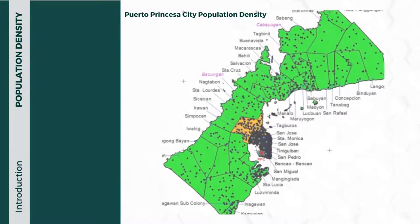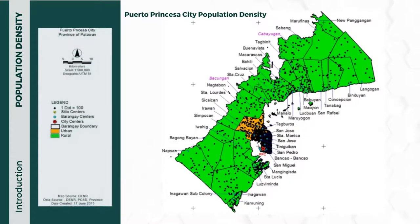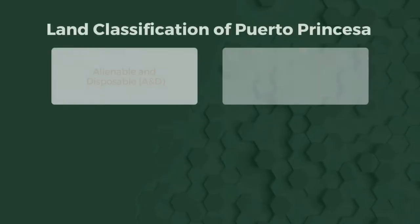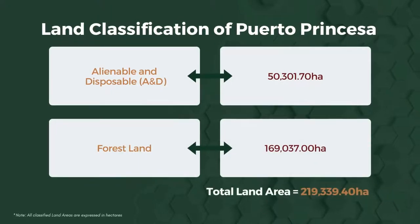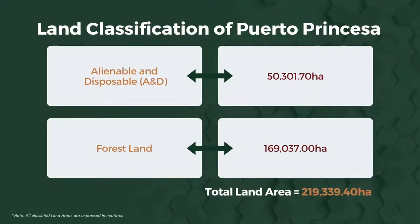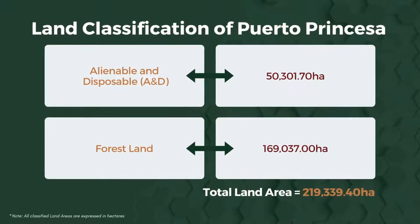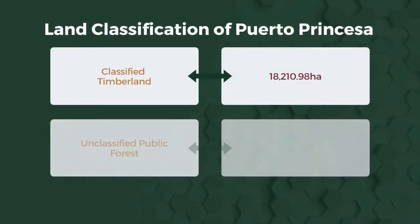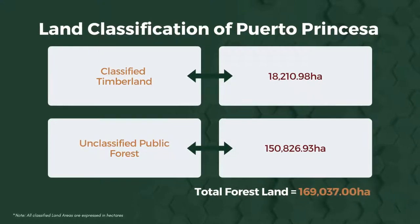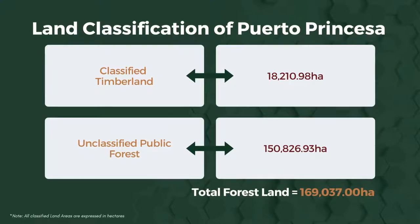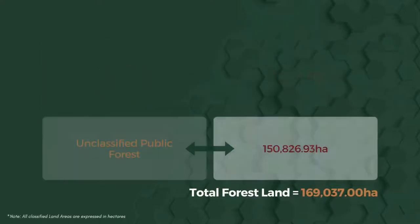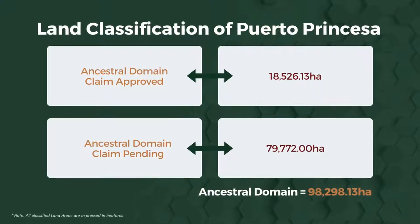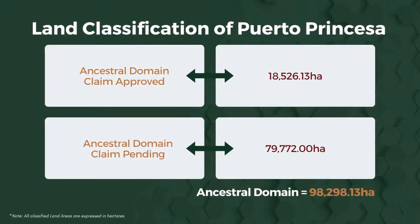The population is concentrated in the urban areas. The total land area of Puerto Princesa is 219,339.40 hectares, where alienable and disposable land amounts to 50,301.70 hectares and forest land is 169,037 hectares. Classified timber land is around 18,210.98 hectares and unclassified public forest is around 163,826.93 hectares. The settlement claim approved is around 18,526.13 hectares, while pending claims is around 79,772 hectares.